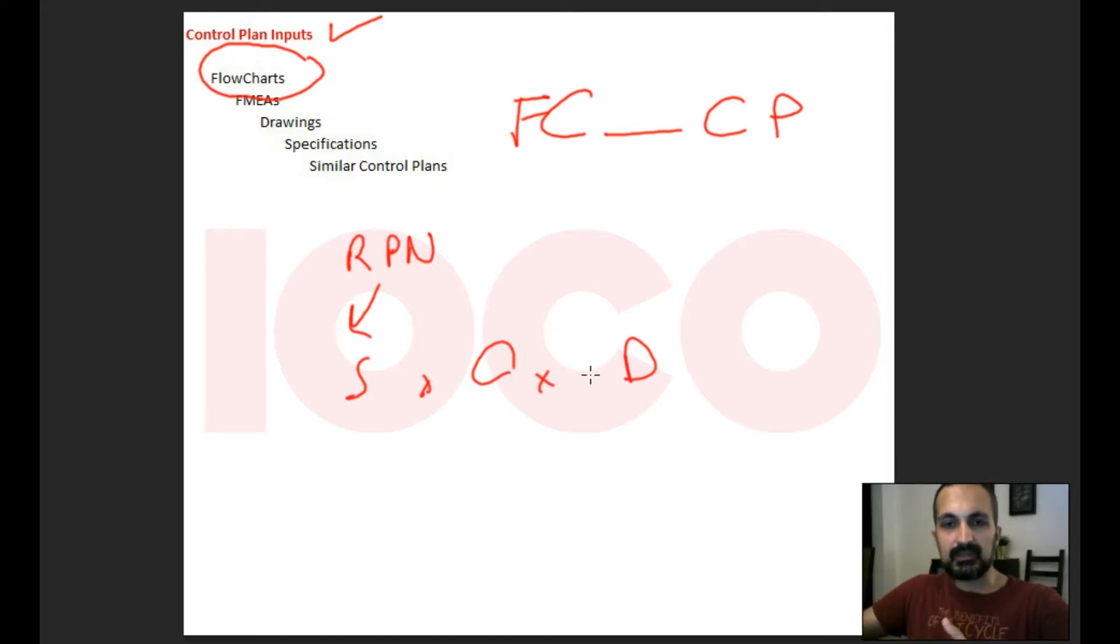There are specific tables with specific numbers. I choose the number according to my situation, the process, or the design situation. Then I calculate a number, take some actions, and lower the risk point. If you remember, detection consists of two items, so you can take action to either prevent or detect the defect.